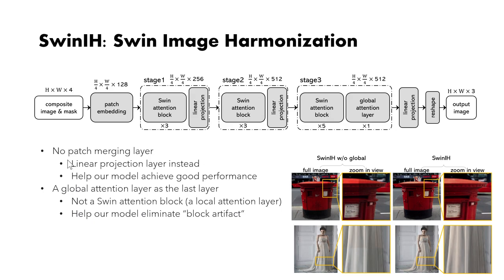Our image harmonization model is based on the SWING transformer. Comparing with the original SWING transformer, our model has two key differences. First, we replace the patch merging layer with a linear projection layer, which is quite important for our model to achieve good performance. Second, our model uses a global transfer attention layer as the last layer. We do not use the SWING attention block, which is a local attention layer, as we find that using a global attention layer helps our model eliminate block artifacts.